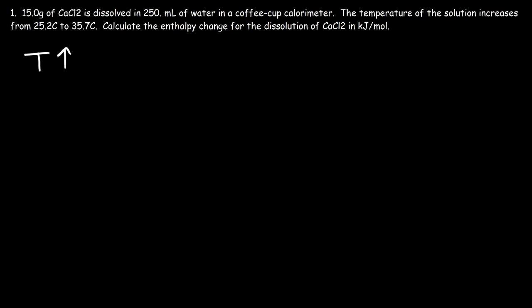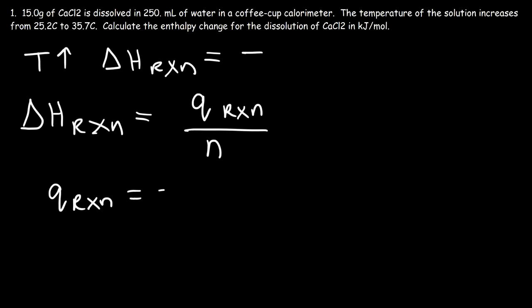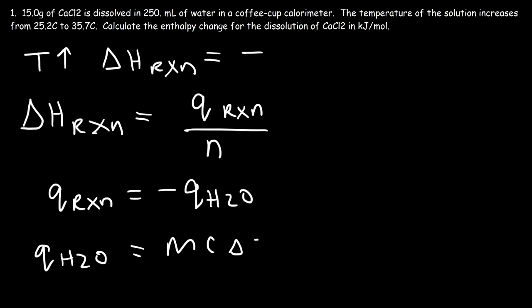Because the temperature is going up, delta H of the reaction should be negative. To calculate the enthalpy change, we need units of kilojoules per mole. We calculate q of the reaction and divide by the number of moles. We have the mass of calcium chloride, so we can use molar mass to convert to moles. Q of the reaction equals negative Q of water, so we need to calculate the heat energy absorbed by all the water molecules.